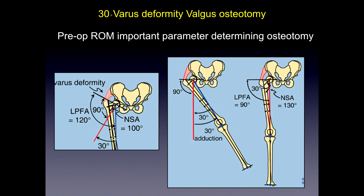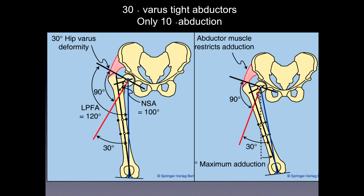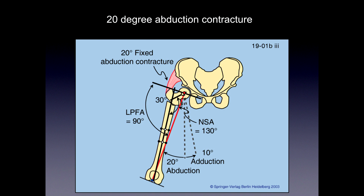Preoperatively, do functional range of motion imaging and clinical examination to look at contracture and short tight muscles. If you have a varus deformity of 30 degrees and want a valgus osteotomy, check adduction: 30 degrees of adduction gives you neutral alignment after the osteotomy, and tight adductors can be addressed with an adductor tenotomy. But if you only have 10 degrees of adduction and do a 30-degree osteotomy, you end up with abductor contracture — which you'd need surgery or physiotherapy to address, though the lever arm effect often allows physiotherapy to stretch out the abductors.